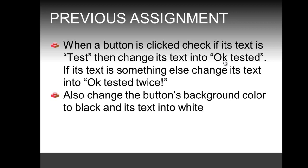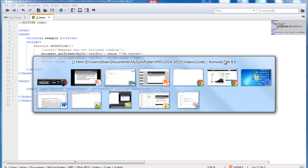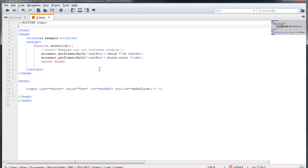The assignment specified in the previous video was: when a button is clicked, check if its text is 'test and change', then change its text into 'OK tested'. If the text is something other than 'test', change its text into 'OK test' twice. I'm going to go straight to my editor — this is where we left the code in the previous video.